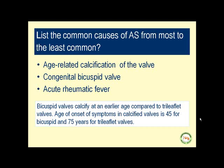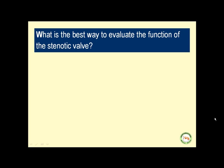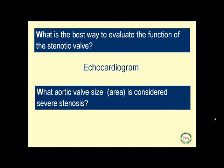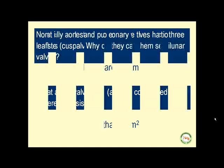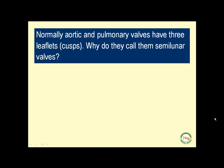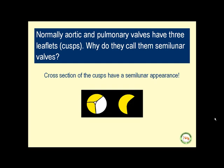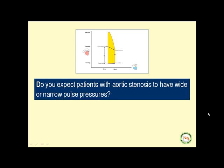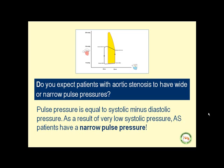The classic patient is 75 years of age or older. The best way to evaluate the function of the stenotic valve is echocardiogram. Severe aortic stenosis is defined as a valve area less than one square centimeter. Normally, aortic and pulmonic valves have three leaflets or cusps — they are called semilunar because the cross-section of the leaflets has a semilunar appearance. Patients with aortic stenosis have a very narrow pulse pressure, which is the difference between systolic and diastolic pressures.